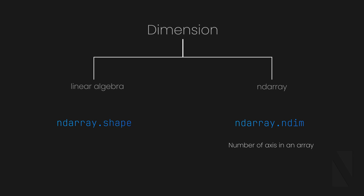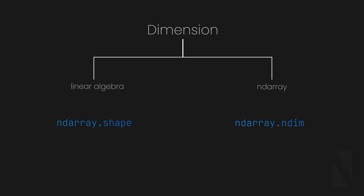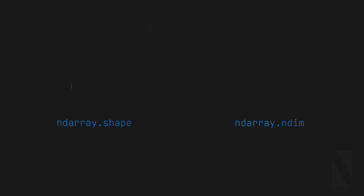Using shape, we can get the dimensions of the array in the linear algebra sense — this is a tuple of integers indicating the size of the array in each dimension. So now we know how to create a vector or a matrix in NumPy: 1D arrays are vectors and 2D arrays are matrices.